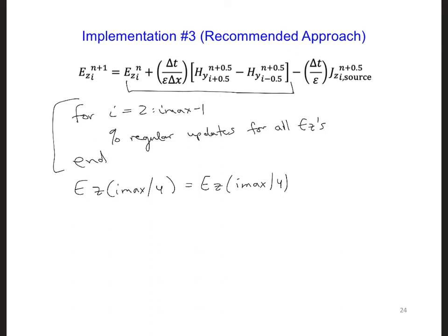But we're going to subtract DT over epsilon, which we could save that as a coefficient ahead of time, times the J, which is in our case, is the time waveform at time step n.